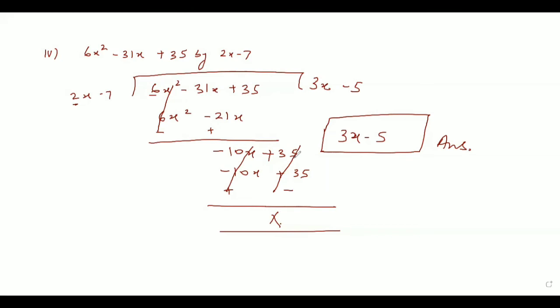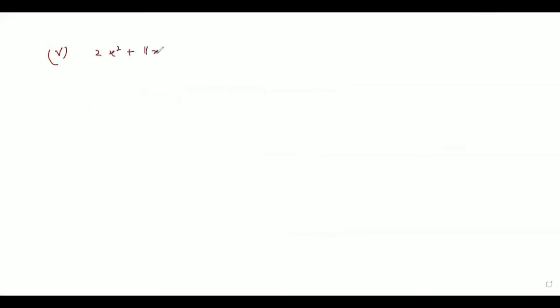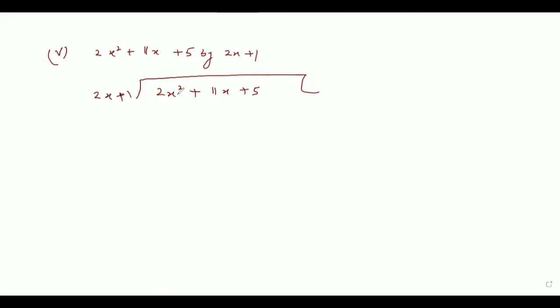Now let's come to the fifth and sixth parts. The fifth part says 2x squared plus 11x plus 5, divided by 2x plus 1. We write 2x squared plus 11x plus 5 divided by 2x plus 1. The first term goes by x only, so we write 2x squared plus x.